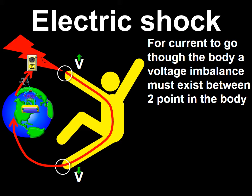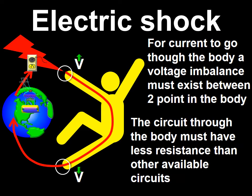Earth connects not only all humans and animals but all electrically harboring entities with movable ions or electrons. Thus it is unlikely that the circuit through the body be the only available circuit for electricity to complete its journey back to its place of origin through earth. Therefore, for an electric shock to occur, the circuit through the body must have less resistance than any other available circuit.